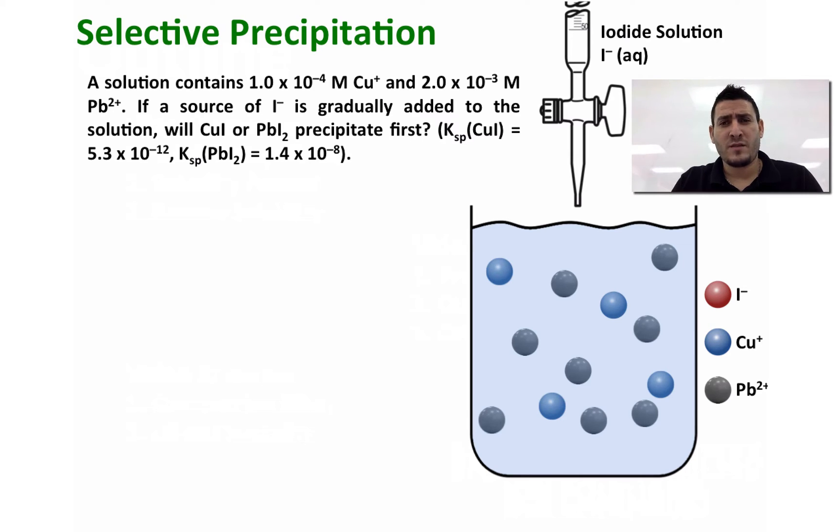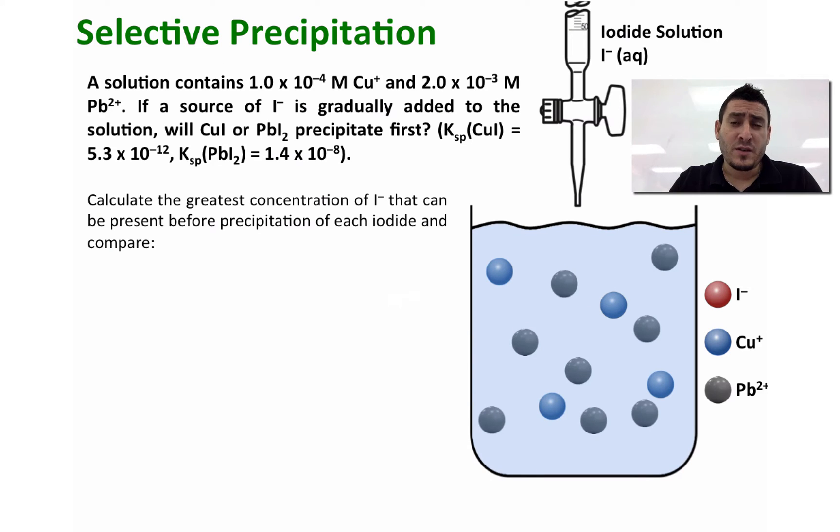So now, as you can see from the animation, the blue balls are the copper 1 ions and the gray balls are for the lead 2 ions. I will be adding I minus, and the question is whether the copper 1 will precipitate first or the lead 2 will precipitate first. In order to answer this question, we need to proceed by order. We need to calculate the greatest concentration of I minus that can be present before precipitation of each iodide, and then we compare it.